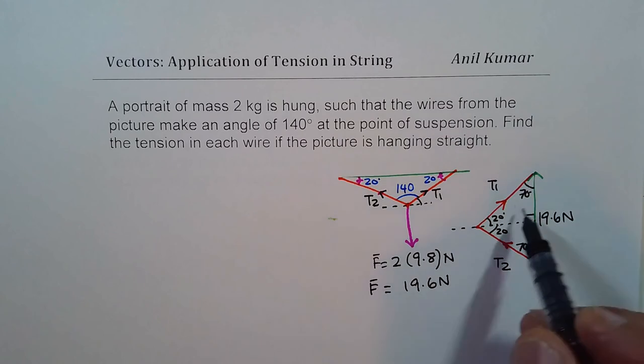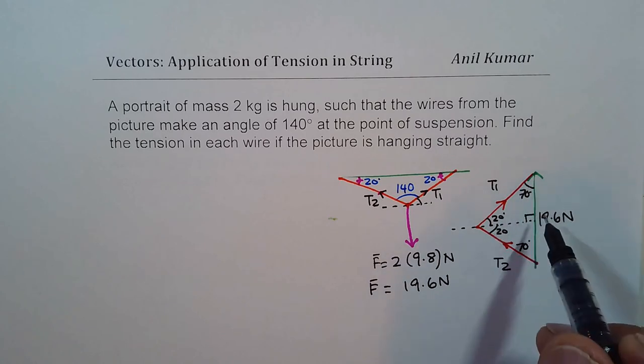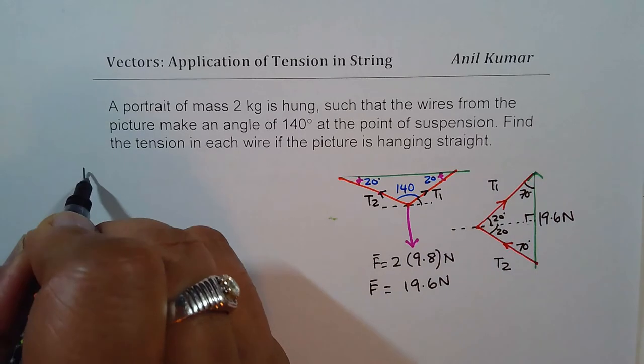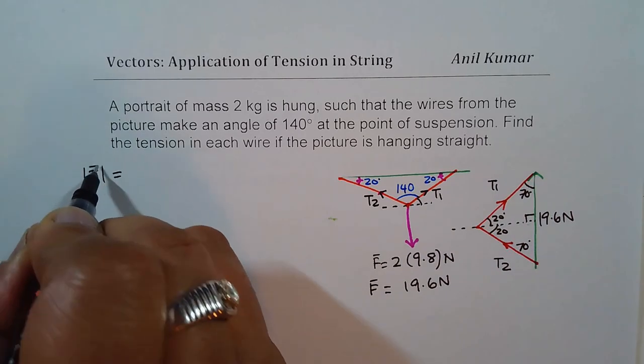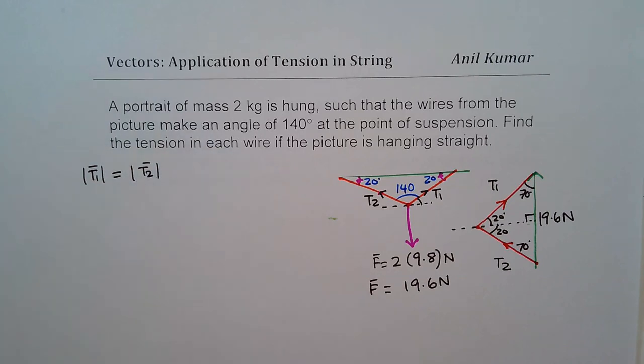Now, from here, we can actually solve the triangle to find the tension in each wire. So as you can see, it forms an isosceles triangle. So the magnitude of tension 1 is actually equal to magnitude of second tension. Both magnitudes are equal. Let us find the magnitude first.